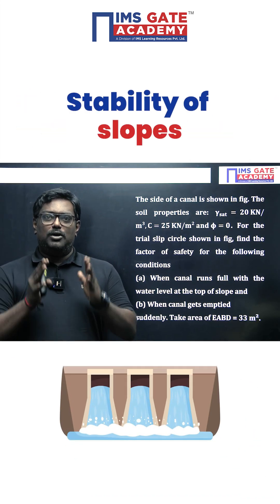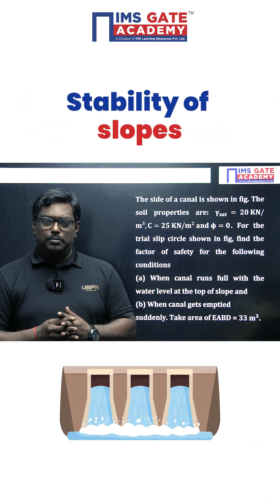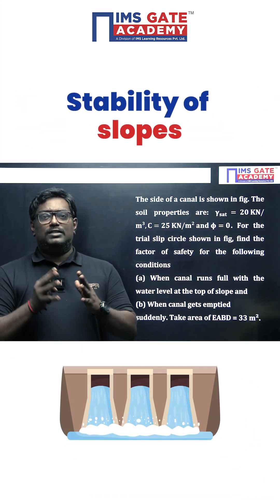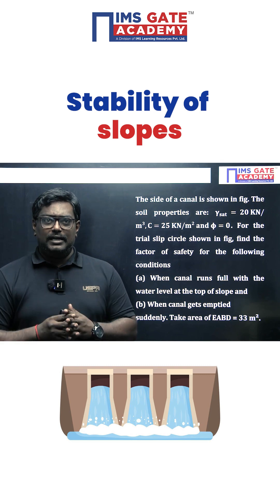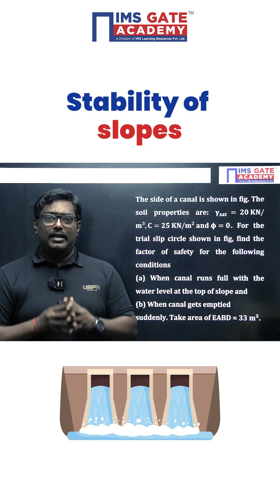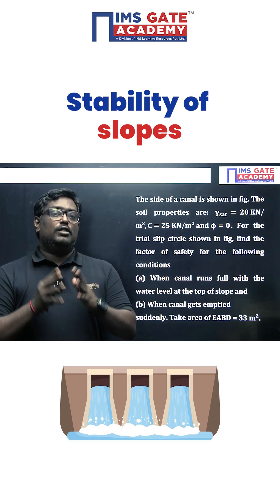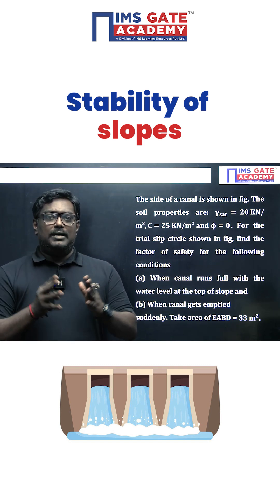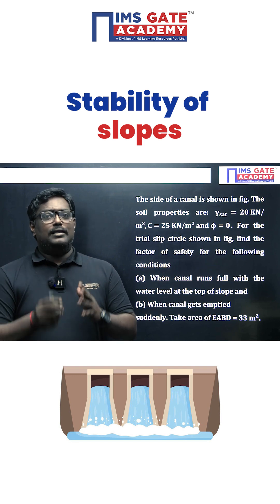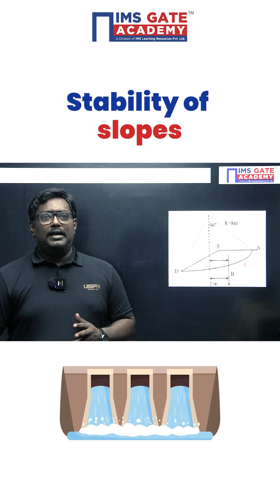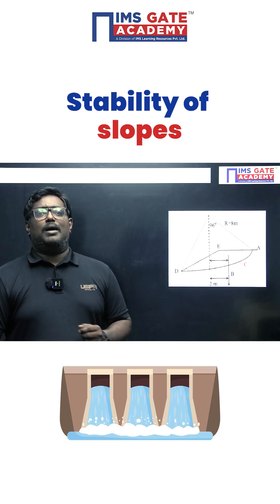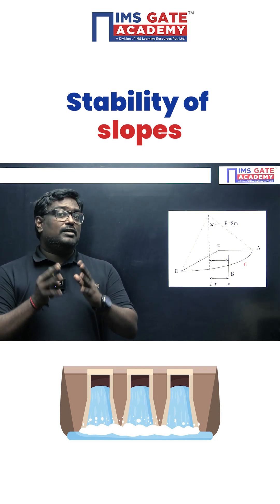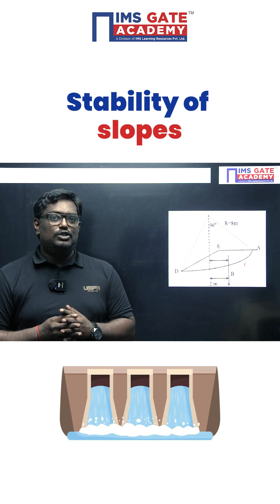Do you want to solve the problem on stability of slope? There are two conditions here: one is when the canal gets emptied suddenly, and when the canal runs fully with water table. They have given the cohesion value, gamma sat value, and the radius. This problem uses the phi equals zero analysis.